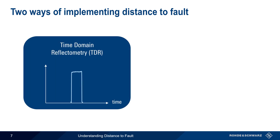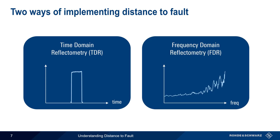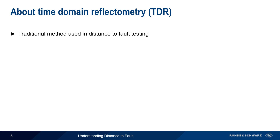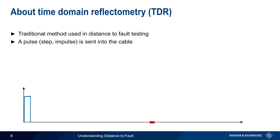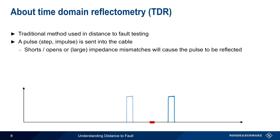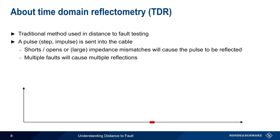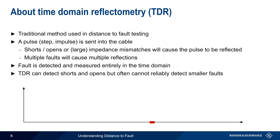Distance to fault can be implemented using time domain reflectometry, or TDR, and using frequency domain reflectometry, or FDR. In TDR, a pulse or other short duration signal is transmitted into the cable. When this pulse encounters a short, an open, or a large impedance mismatch, some portion of this pulse's energy will be reflected. If multiple faults are present, this will cause multiple reflections. Faults are detected and measured entirely in the time domain, by observing the time delay between when the pulse was transmitted and when reflections are received. One drawback of TDR is that it can generally detect shorts and opens, but often cannot reliably detect smaller faults.